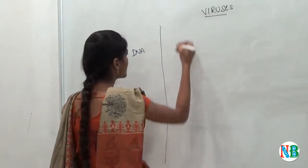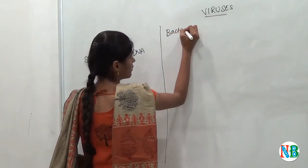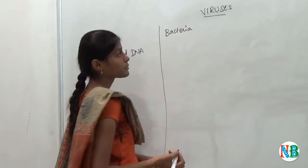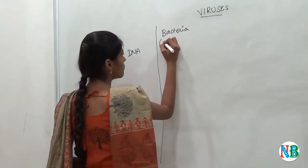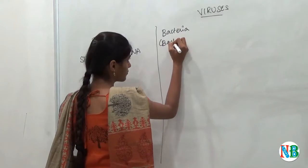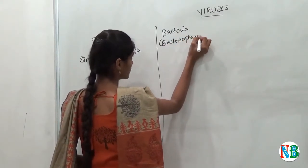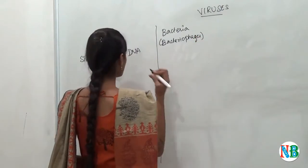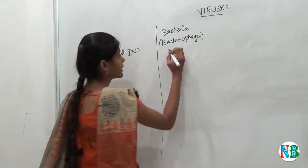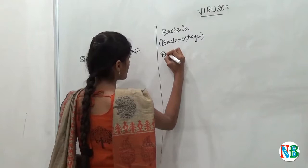Then bacteria. The virus which affect bacteria are called bacteriophages. So this virus contains double-stranded DNA.